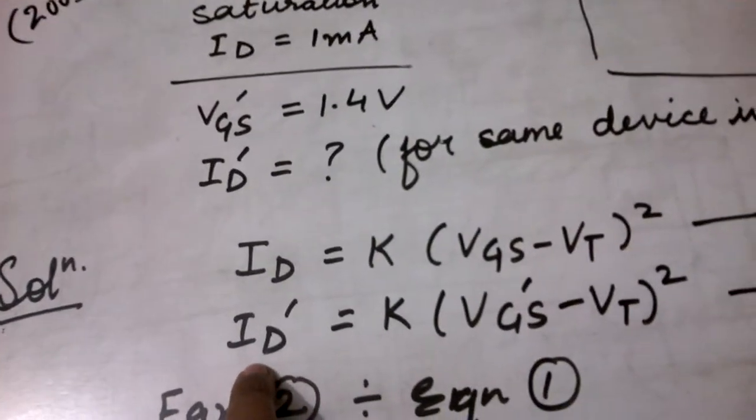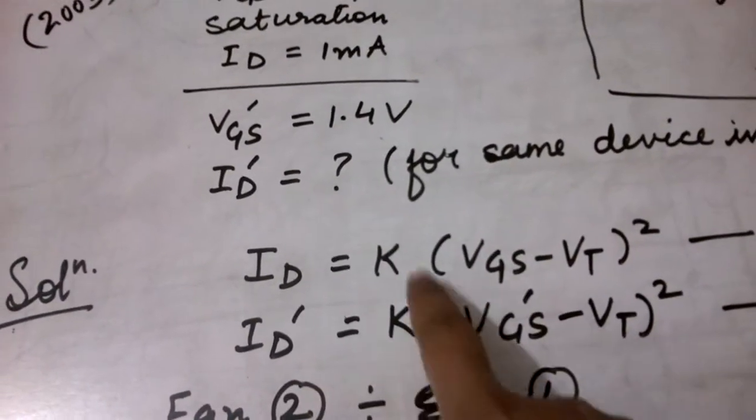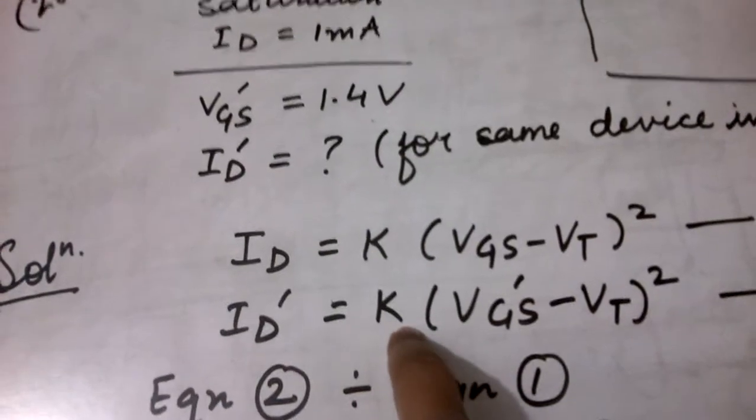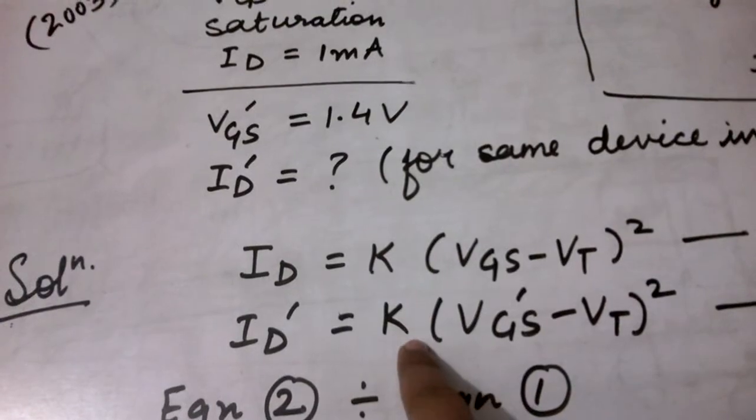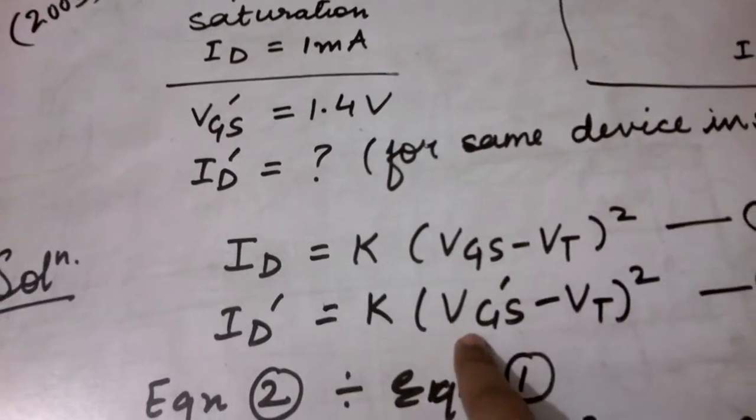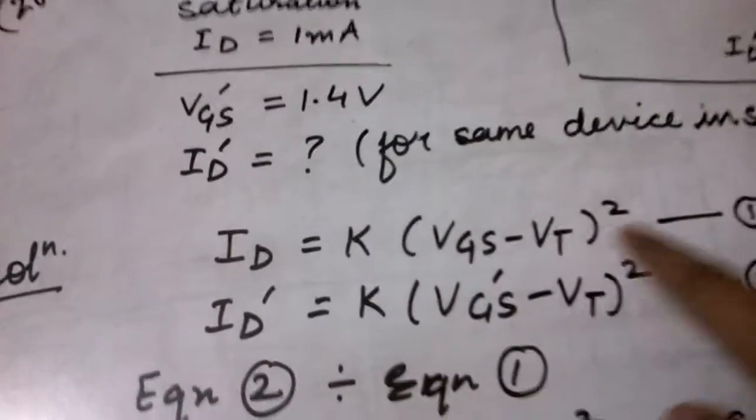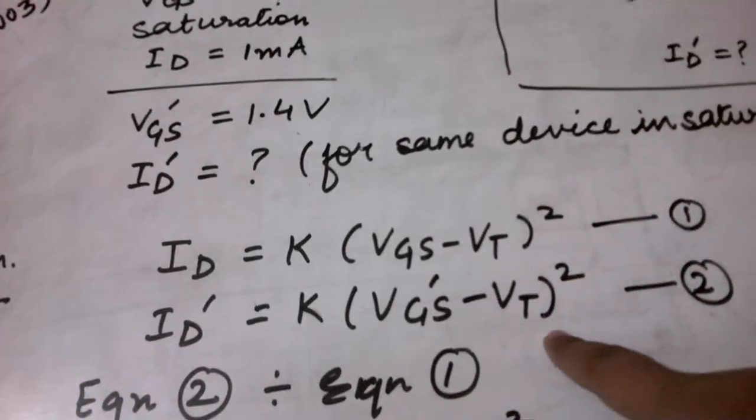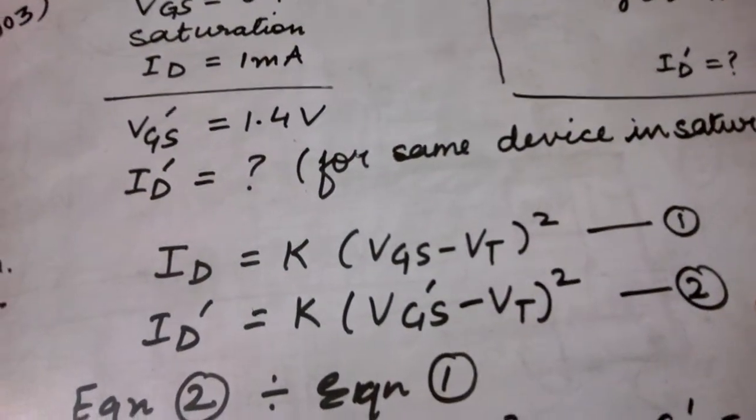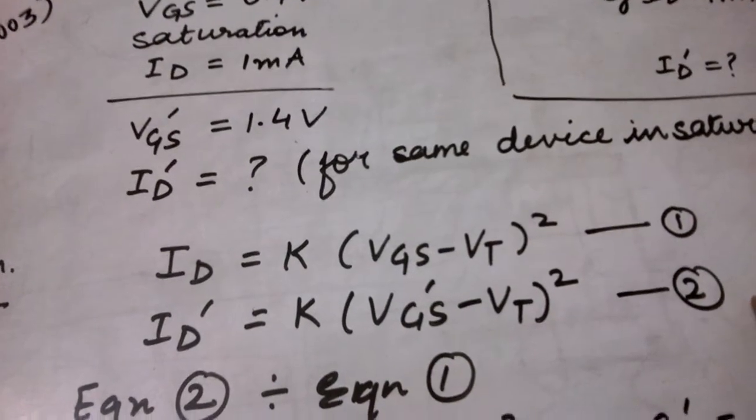Id dash is equal to K, where K remains the same because K is dependent upon the device parameters and the device is the same. So K will remain the same here. Vgs becomes Vgs dash here. V threshold remains the same since the MOSFET device is the same. So we get two equations relating the drain current with the input voltages.